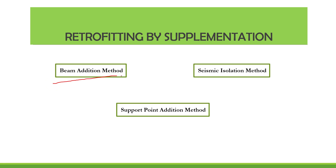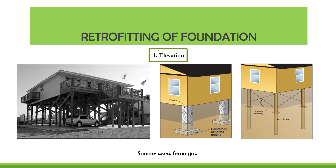You can also retrofit by supplementation — adding additional members to the building, for example adding additional beams to a slab to reduce its span, or adding additional girders to bridge decks to reduce the span of the bridge. The supporting point addition method involves supporting intermediate sections of beams or concrete members with new members, which reduces the span and improves the capacity of the structure as a whole.